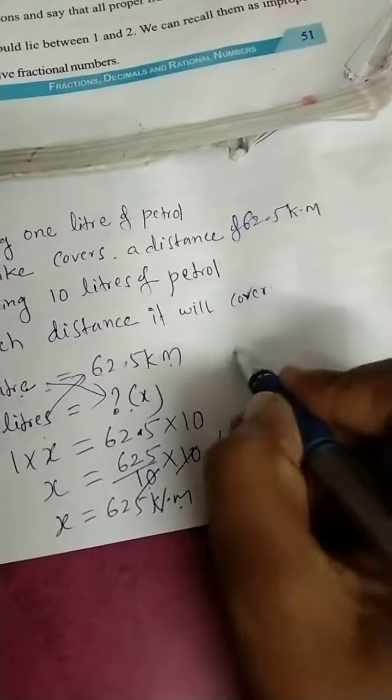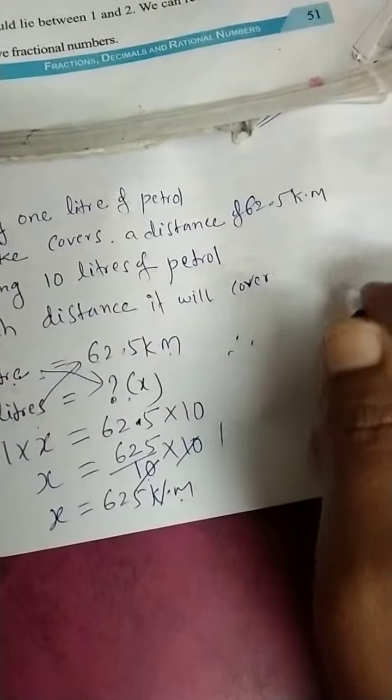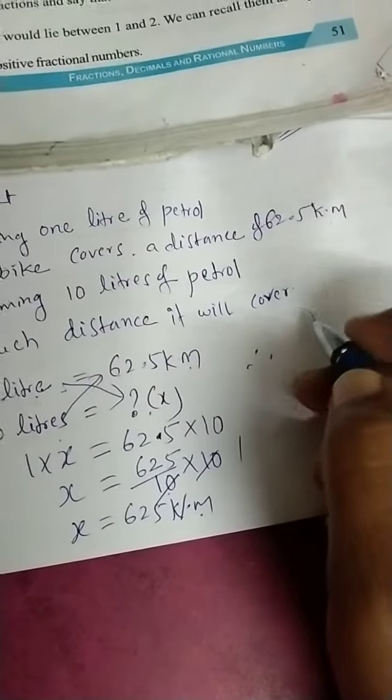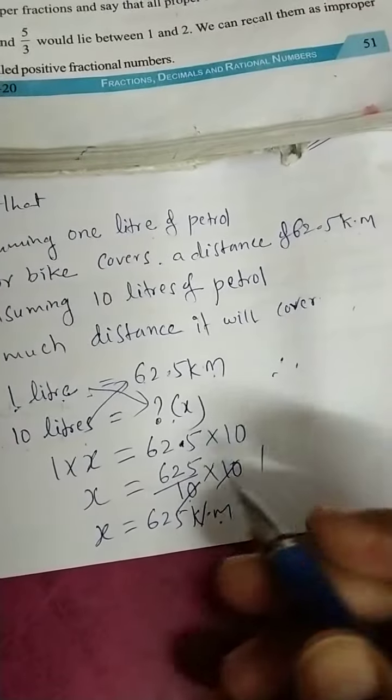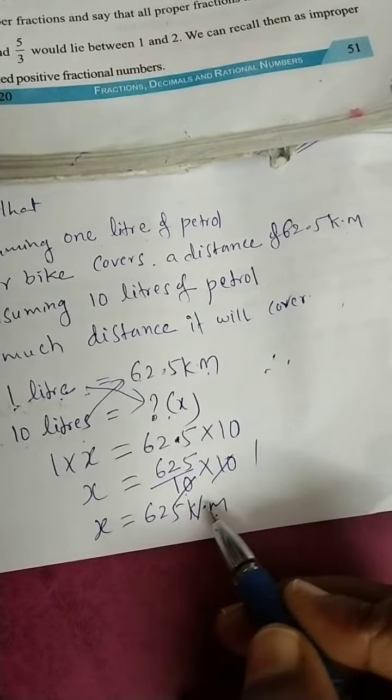Therefore motorbike cover a distance 625 km by using 10 litres of petrol. By using 10 litres of petrol, motorbike covers 625 km.